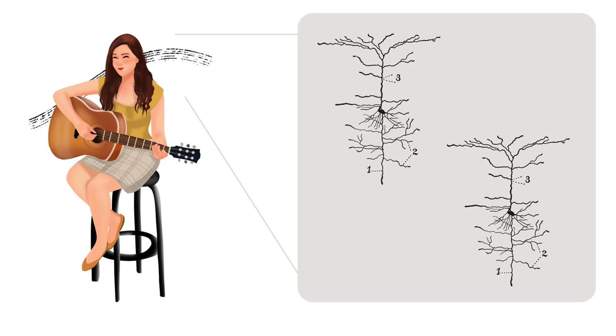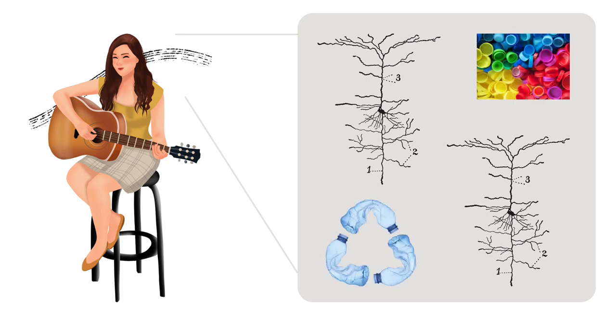In other words, how we learn can modify connections between neurons, much like plastic or play-doh. This is where we get the term neuroplasticity.